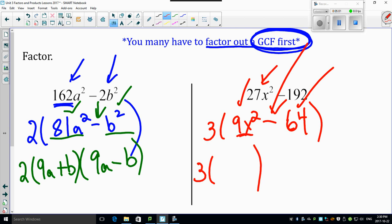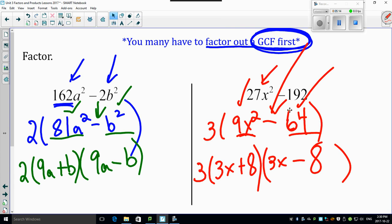9x squared square rooted is just 3x. 64 is just 8 and 8. One's a plus. One's a minus. You're done. That's how easy and how wonderful difference of squares can be if you see the pattern.